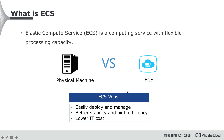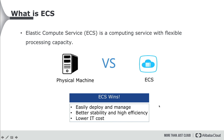Let's do a quick recap of this chapter. Elastic Compute Service is a computing service with flexible processing capacity. Compared to a physical server, it has many advantages: ECS can easily deploy and manage applications with better stability and high efficiency. Its flexibility can also lower overall IT cost and enable you to focus on key business innovation. That's all for this chapter. Thank you very much for watching.